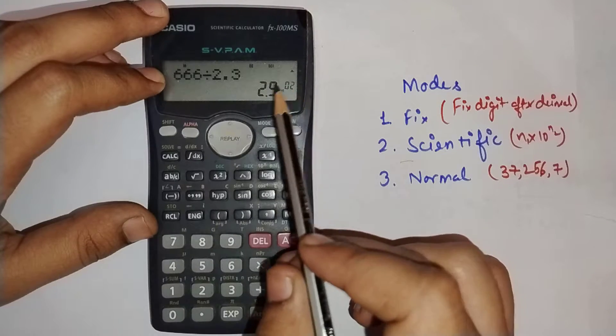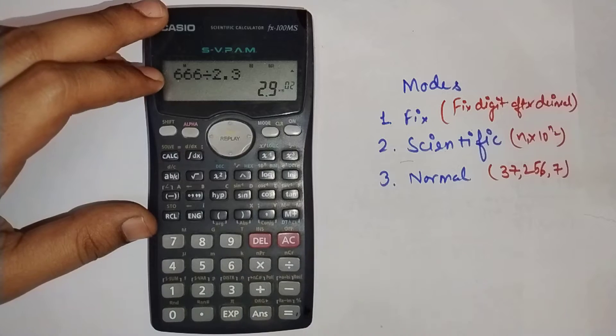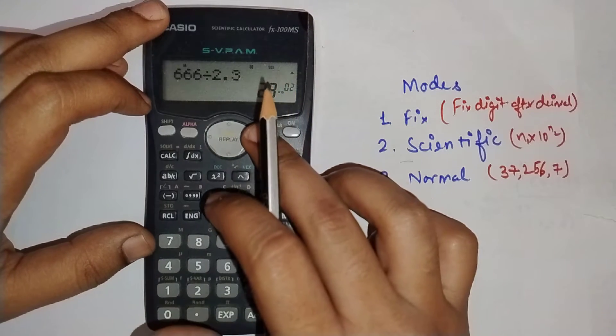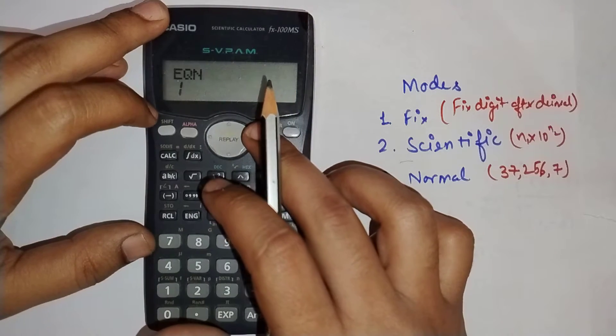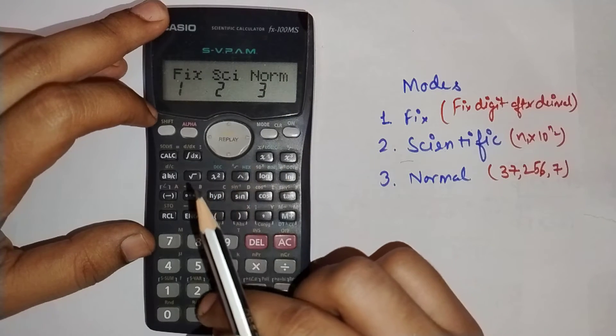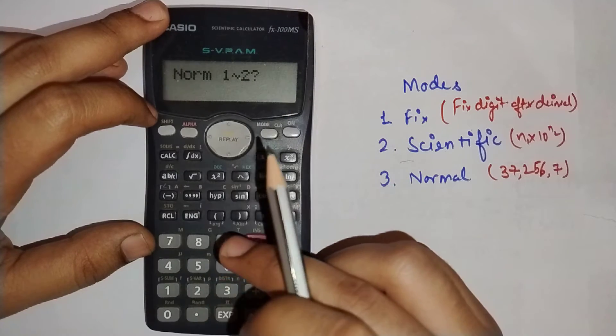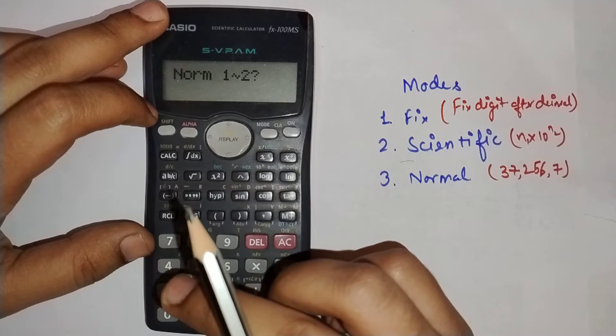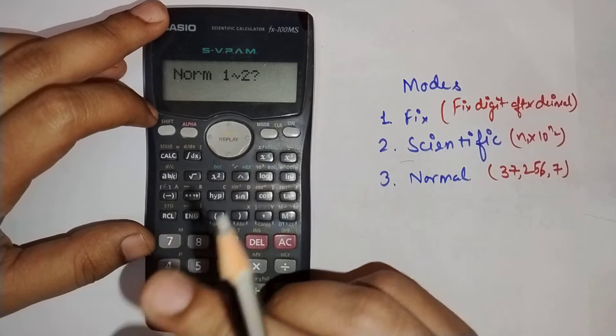If we press mode, we can switch to normal mode. Normal mode asks for option 1 or 2. Option 1 is for million/billion format, option 2 is for thousands/hundreds. I'll press 1.